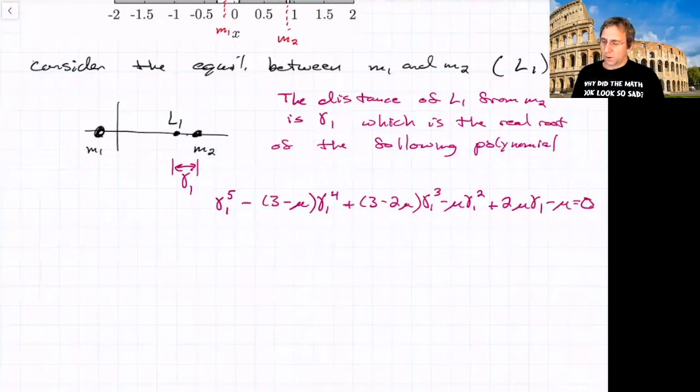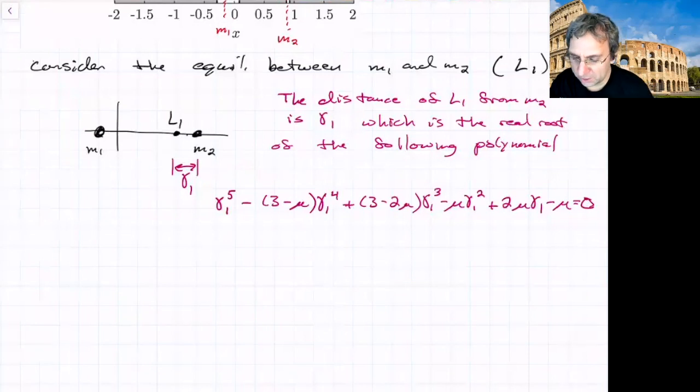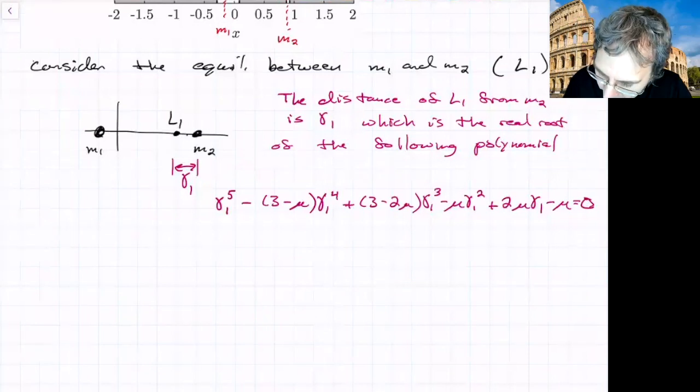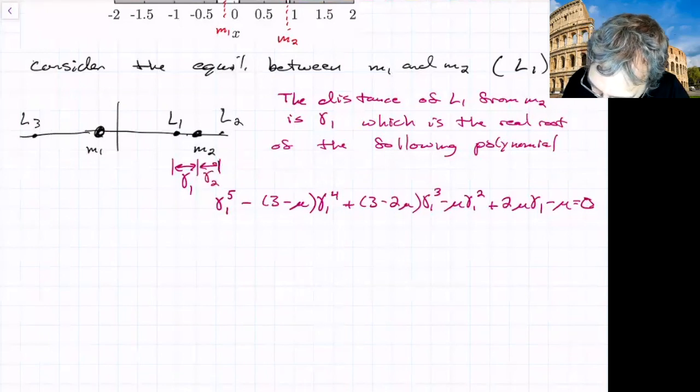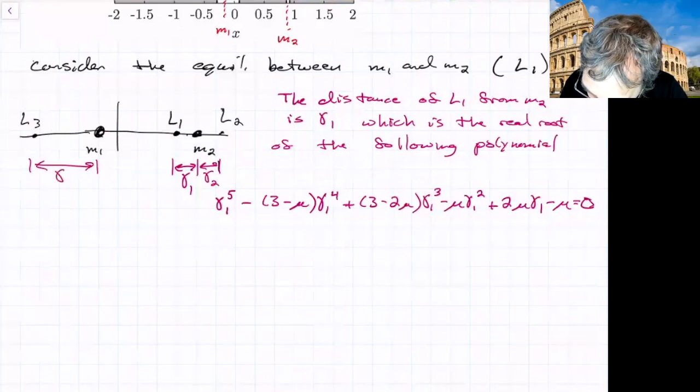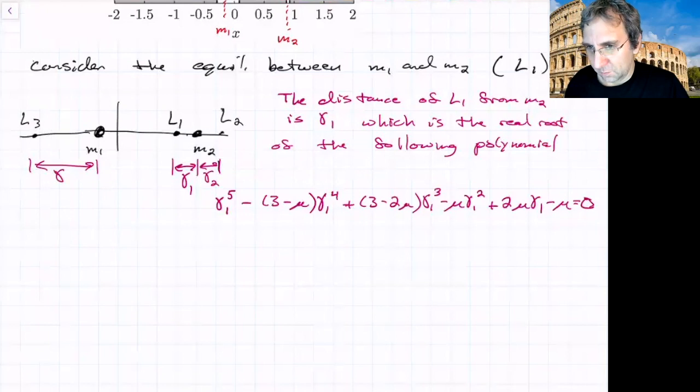There's a similar one for gamma 2 and a similar equation for gamma 3. There are three points: L3, L2, and L1. Usually it's these gamma things that people solve for, gamma with respect to the nearest primary. For L1 and L2, it's always with respect to M2. For L3, you do it with respect to M1.